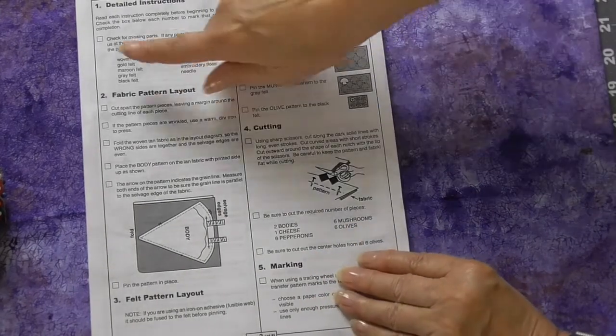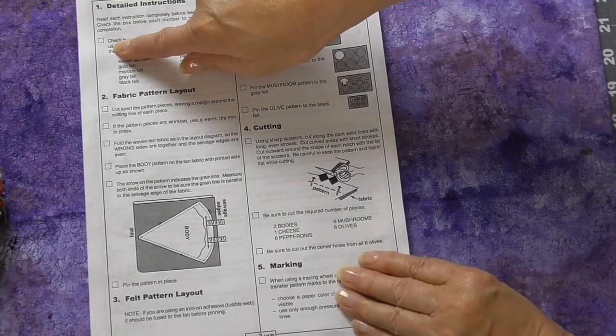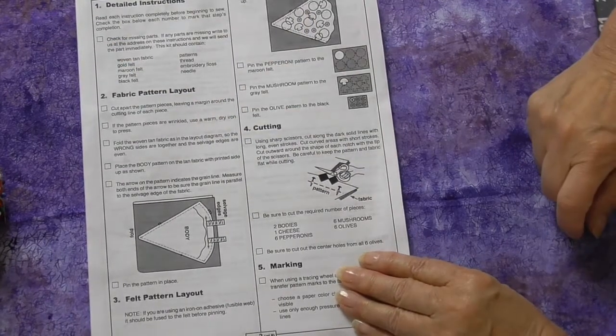The guide sheet has these little boxes that you can check off as you complete a step. This will help you keep track of where you are.